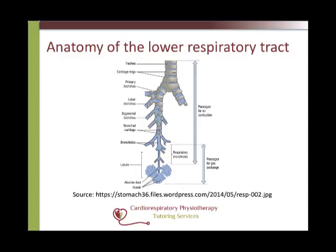The trachea is supported by about 20 cartilaginous rings that are C-shaped with an opening posteriorly, protecting the trachea and ensuring it remains open. The posterior wall, devoid of cartilage, consists of an elastic ligamentous membrane and bundles of smooth muscle called the trachealis muscle. During coughing, this muscle assists to propel air more rapidly through the trachea, helping to expel mucus and foreign bodies. The opening also allows movement of food down the oesophagus, which sits directly behind the trachea. The mucous membrane lining the trachea consists of pseudostratified columnar epithelium with numerous goblet cells; cilia constantly propel mucus and foreign particles towards the larynx, where they enter the pharynx for elimination via the digestive system.